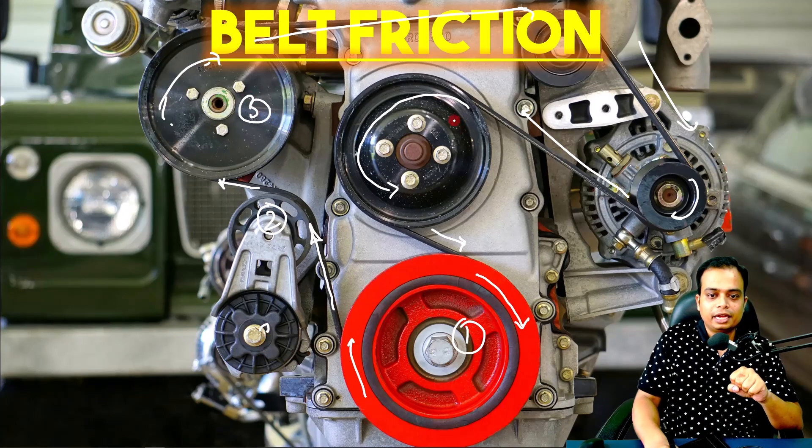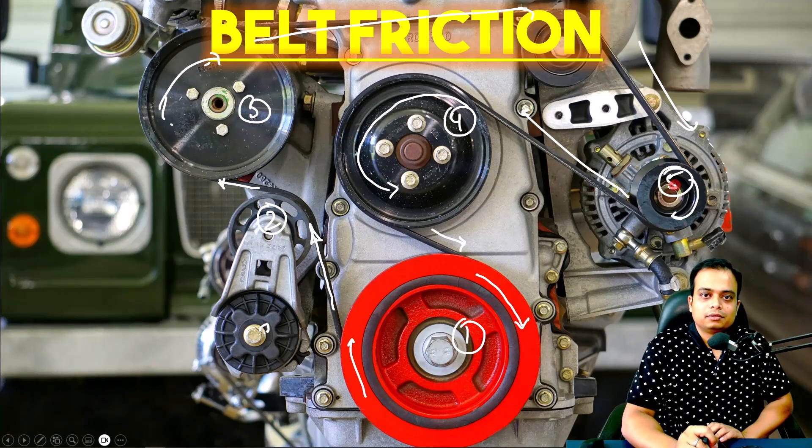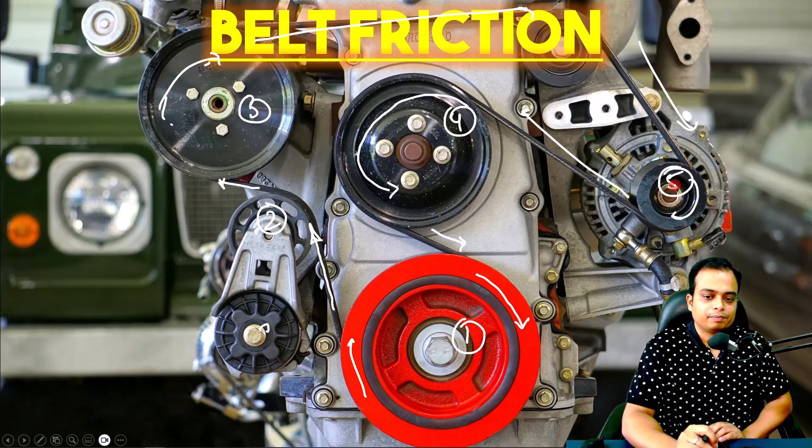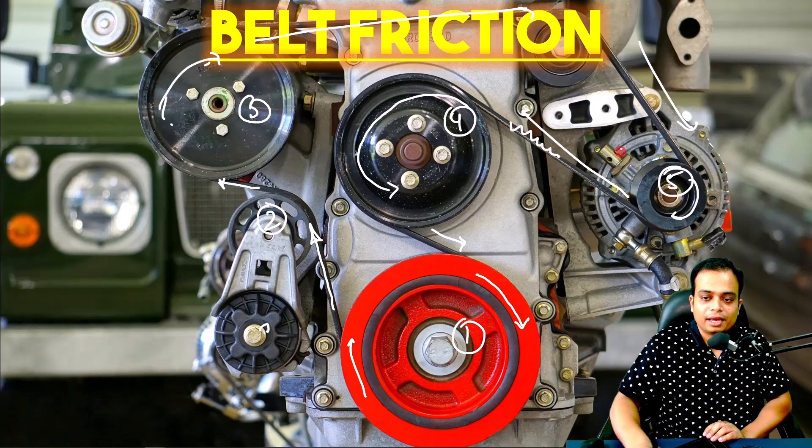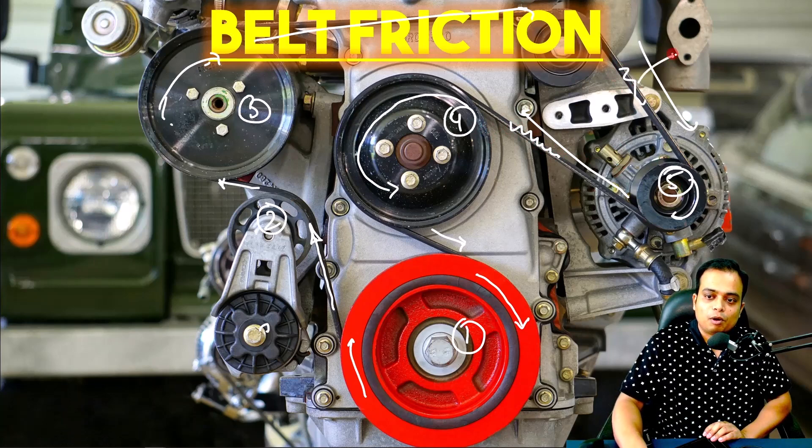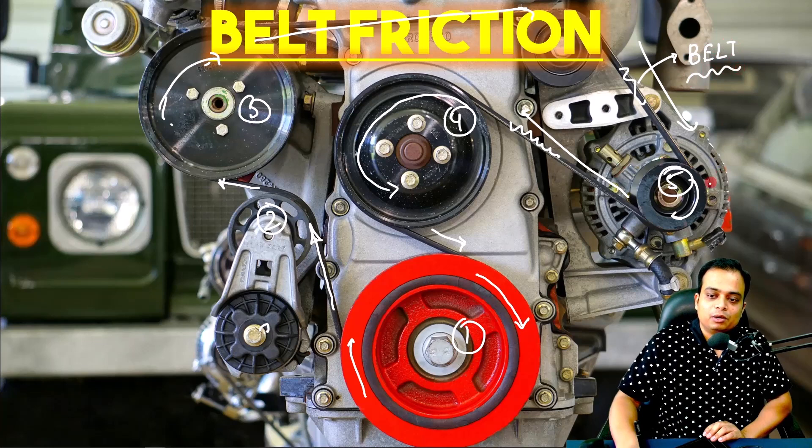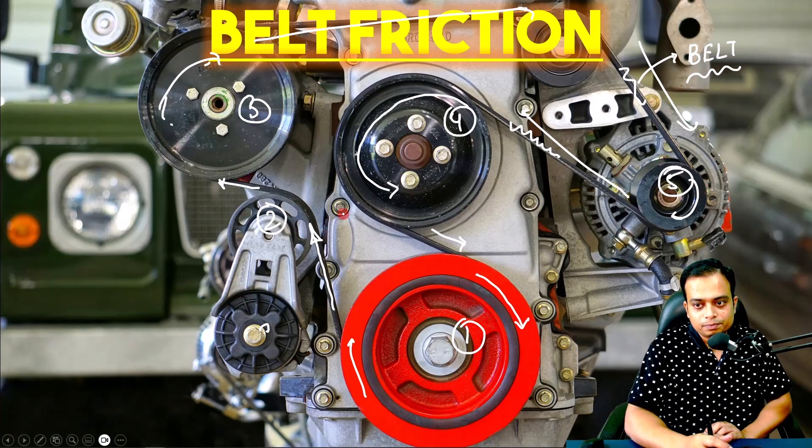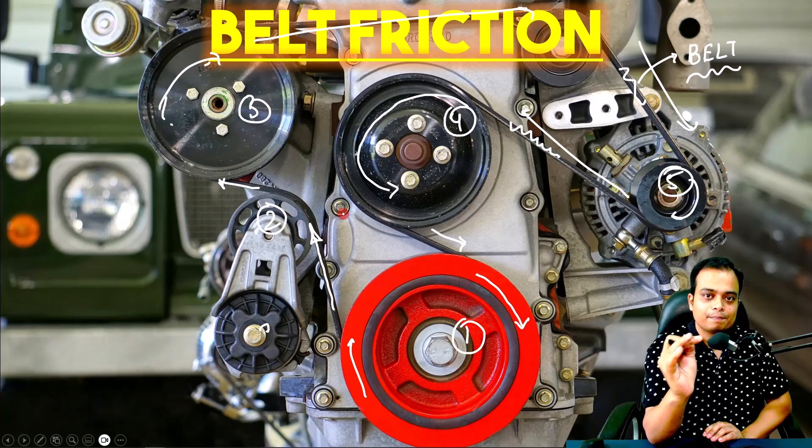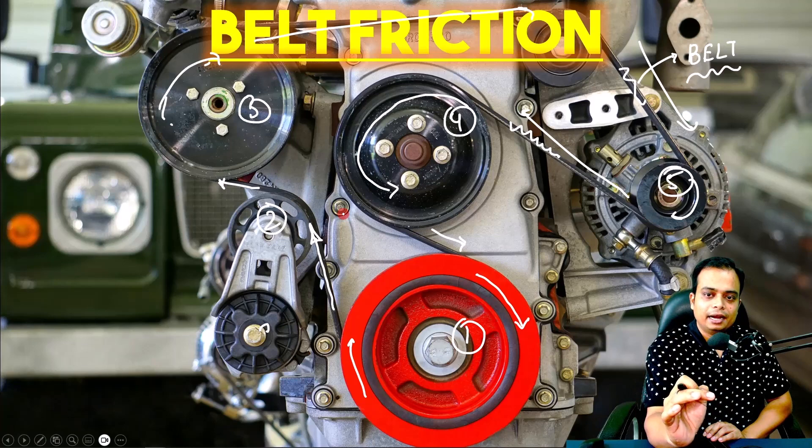What you see is that power is being transmitted from shaft one to shaft two to shaft three, then to shaft four, then to shaft five. All of this is beautifully synchronized. You can fine-tune it, and all of this has happened because of one important mechanical device popularly known as a belt.